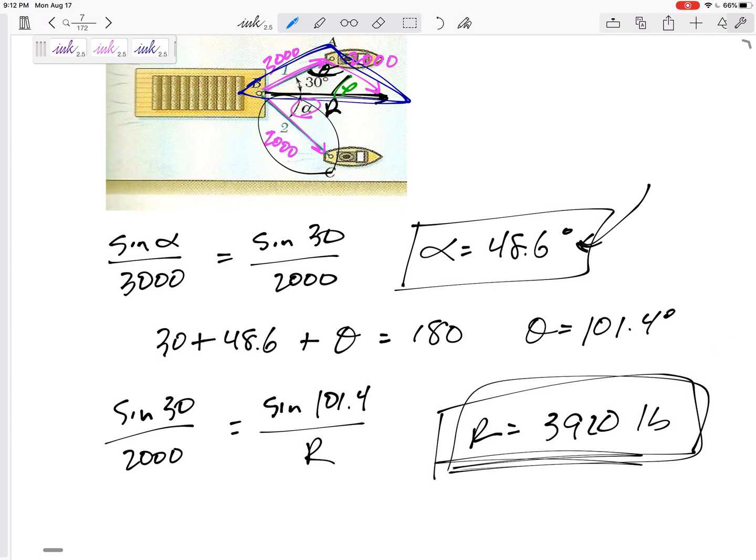So sometimes the question isn't just what add these up and what is the resultant. Sometimes it tells you something about the resultant and you have to find the unknown angle alpha like this one. But we use the parallelogram rule. We drew tip to tail. We saw our triangle use law of sines to find what we're looking for.